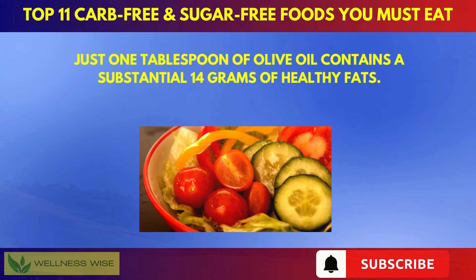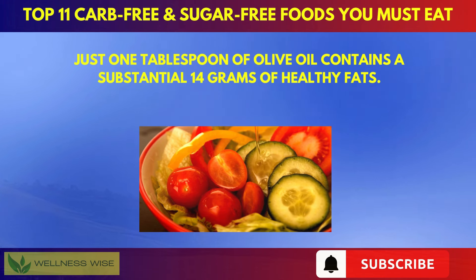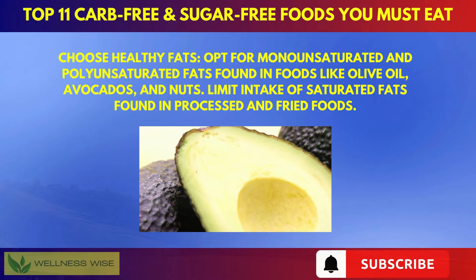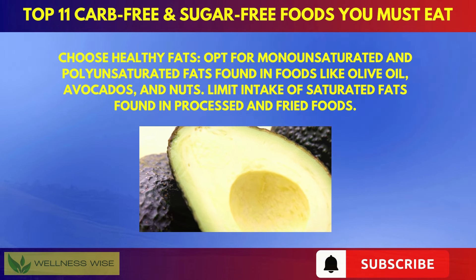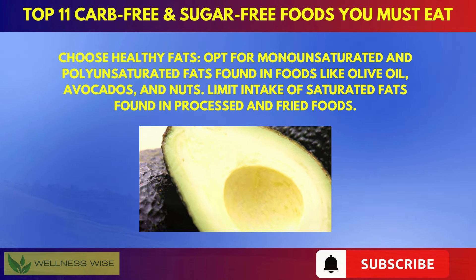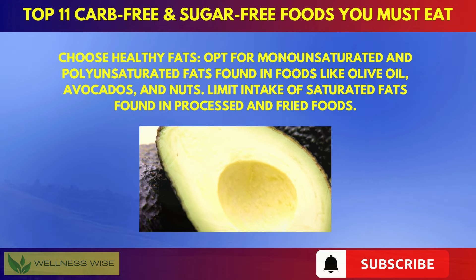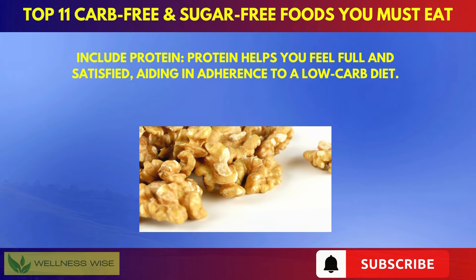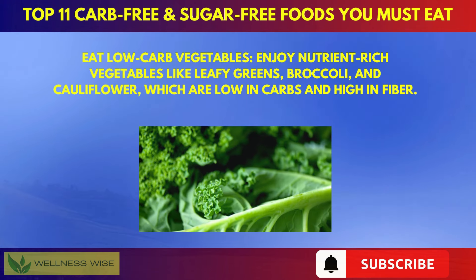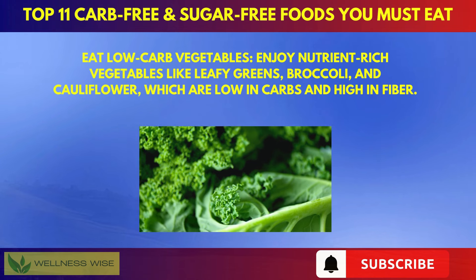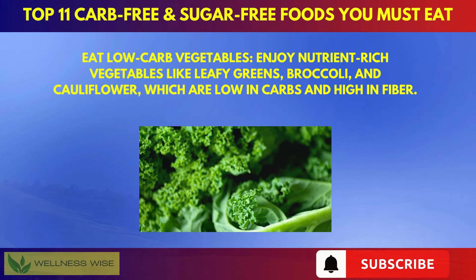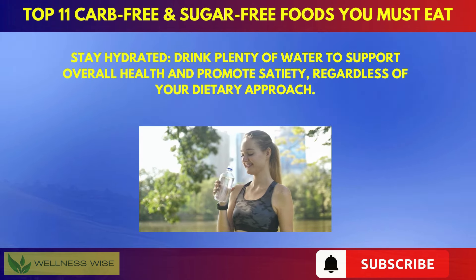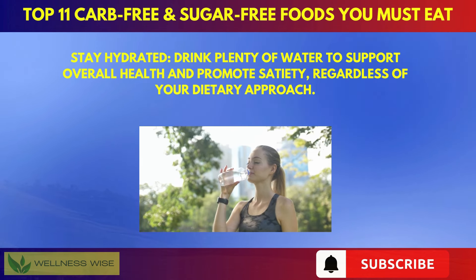Just one tablespoon of olive oil contains a substantial 14 grams of healthy fats. Here are some tips for following a high-fat, low-carb diet: Choose healthy fats — opt for monounsaturated and polyunsaturated fats found in olive oil, avocados, and nuts, and limit intake of saturated fats found in processed and fried foods. Include protein, as it helps you feel full and satisfied. Eat low-carb vegetables like leafy greens, broccoli, and cauliflower, which are low in carbs and high in fiber. Stay hydrated and drink plenty of water to support overall health and promote satiety.